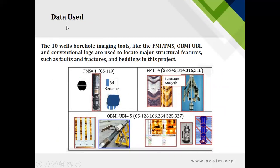So with the data we used, we used 10 well imaging tools: FMS, FMI, OVMI and UVI, petrophysical logs, conventional logs, and reservoir logs to locate major structural features, such as faults, fractures, and bedding in this project. You can see here FMS, FMI, and OVMI and UVI tools that we used to measure fracture properties.